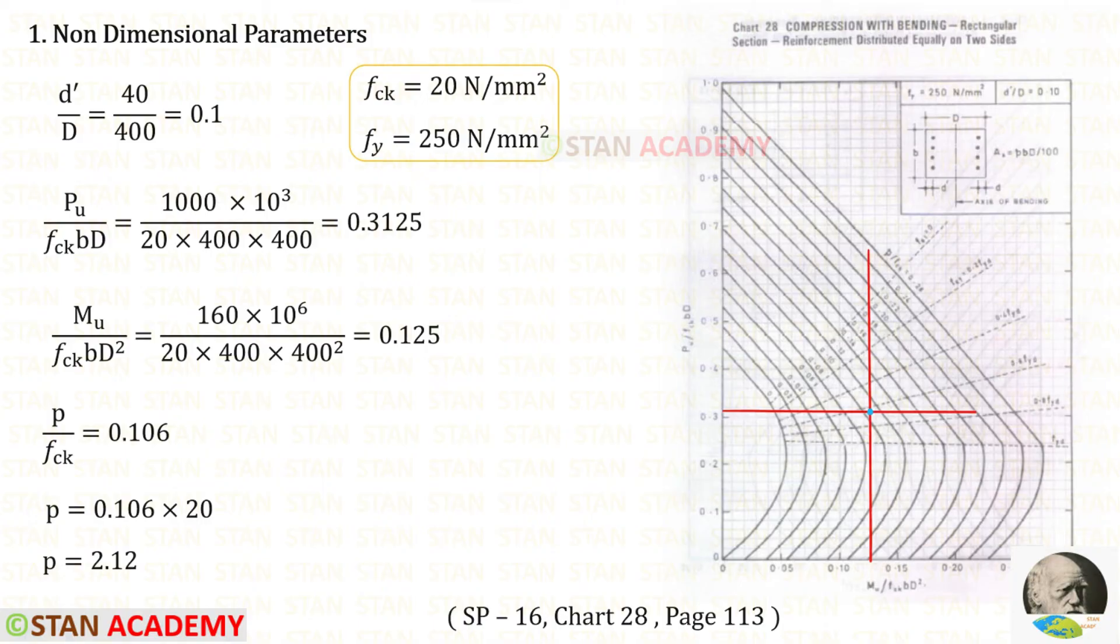This point is little after the curve 0.1 since the point is not exactly 0.1 and little after that. For p upon fck we can approximately take 0.106.